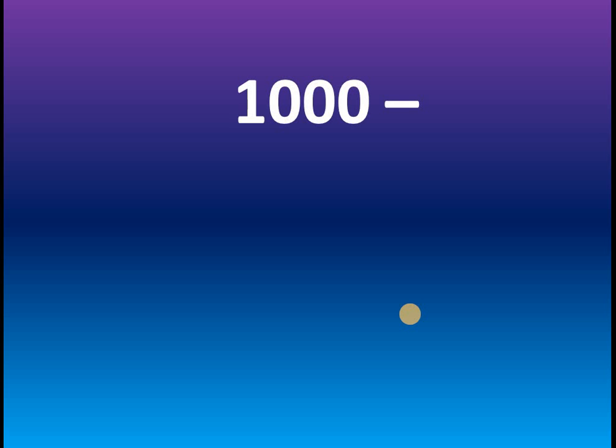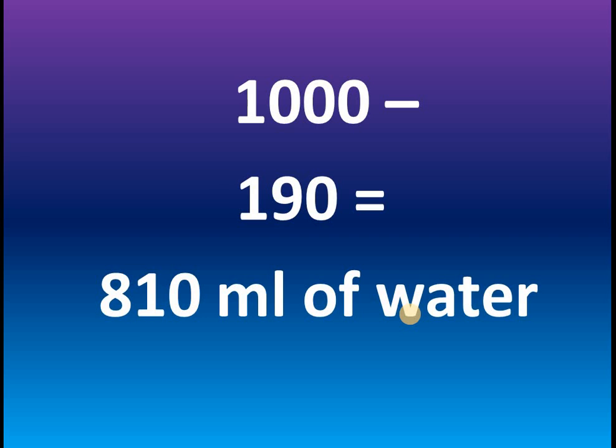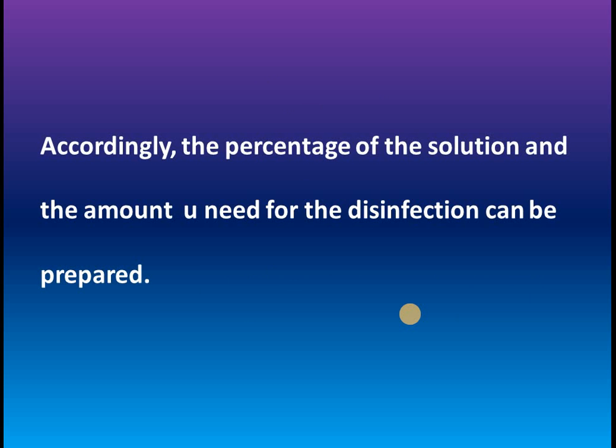1000 ml minus 190 ml (the amount of sodium hypochlorite to be diluted) equals 810 ml of water. So, 810 ml of water plus 190 ml of sodium hypochlorite solution results in 1 liter of solution which is 1% in concentration.